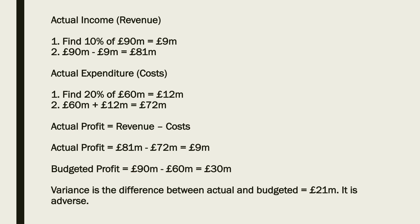Then we need to calculate the other side of that — the actual expenditure. Remember, expenditure is simply just costs. Firstly, we find 20% of 60 million, which is 12 million, and we add that on to the 60 million. 60 plus 12 is 72 million.